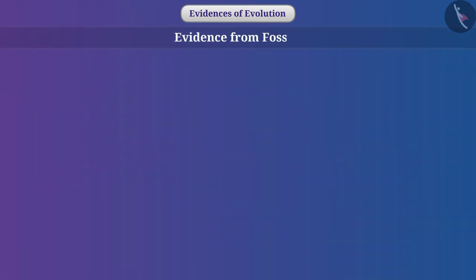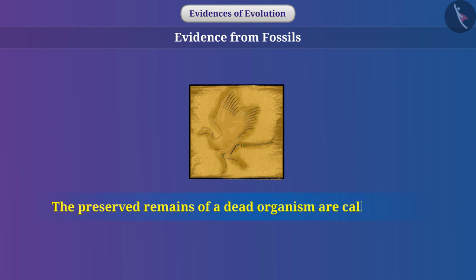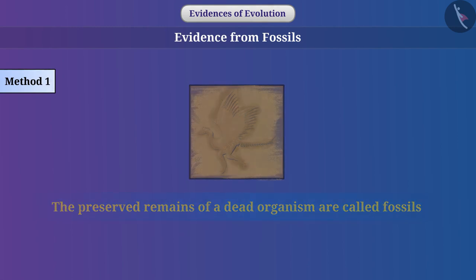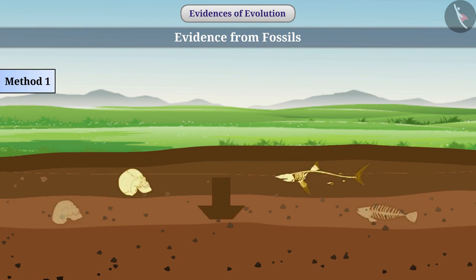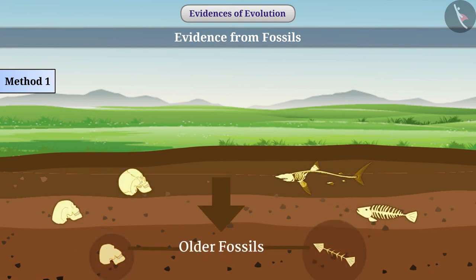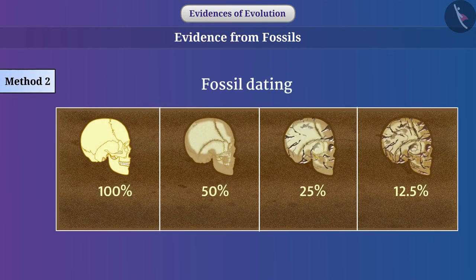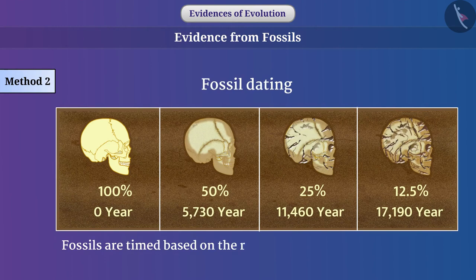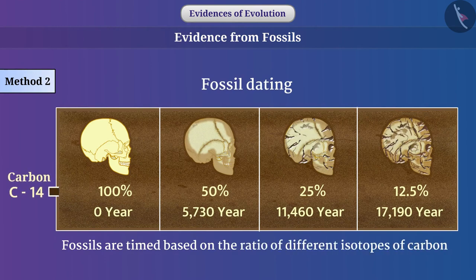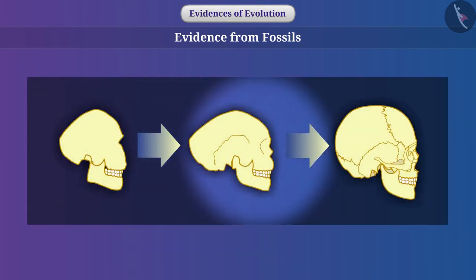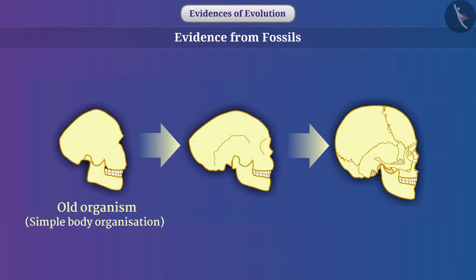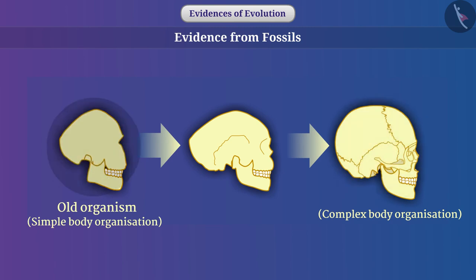Evidence from fossils: The preserved remains of dead organisms are called fossils. One method of finding out how old fossils are is by digging into the earth — the deeper the fossils are found, the older they are. Other methods include fossil dating, in which fossils are timed based on the ratio of different isotopes of carbon found in a fossil. From the study of fossils, it is known that the body organization of the oldest living organisms was simple and gradually became complex with time — that is, complex organisms evolved from the simplest organisms.